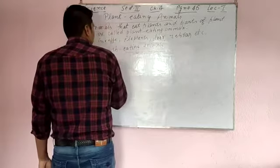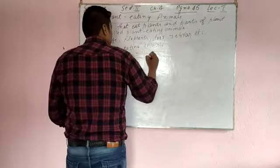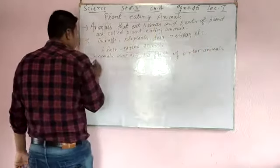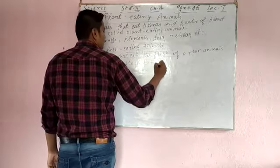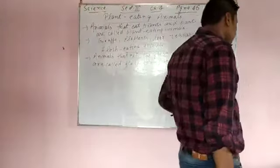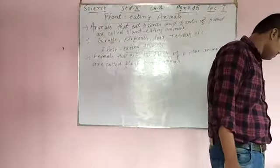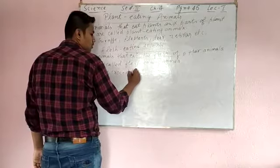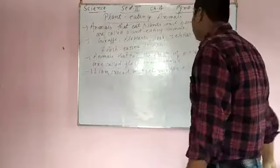So animals that eat the flesh of other animals are called flesh-eating animals. Animals like bears eat fish, and lions eat other animals — first they hunt, then they eat. Examples of flesh-eating animals include lion, crocodile, tiger, snake, etc.